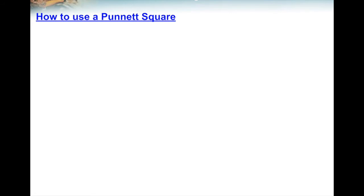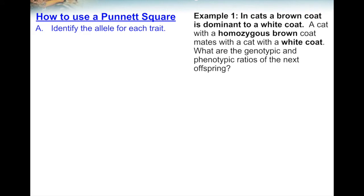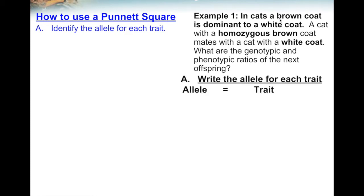I'm going to show you how to use a Punnett square. The first thing you need to do is identify the allele for each trait. In the example: in cats, a brown coat is dominant to a white coat. Brown coat is dominant, so it gets a capital letter — let's use capital B for brown. For the allele, we use capital B representing brown coat. White coat is recessive, so we still use the letter B but make it lowercase b to represent the allele for white coat.